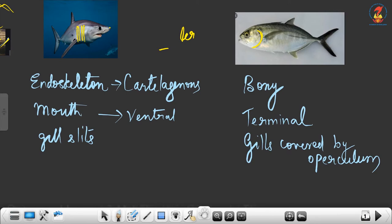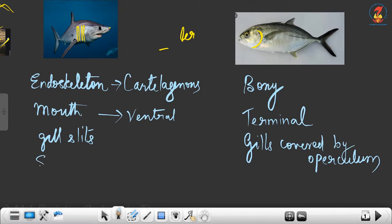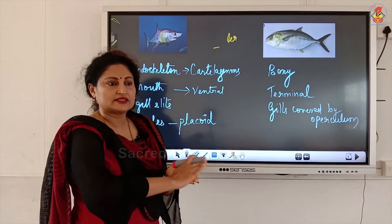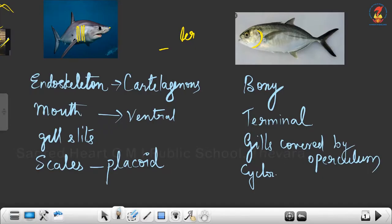Fish have scales. In cartilaginous fish like shark, the scales are not very visible, but if you observe under a microscope and scrape its skin there are scales — these are called placoid scales. In bony fish, the scales are very visible. We consume bony fish and have seen scales being removed. The type of scales in bony fish are cycloid or ctenoid scales.